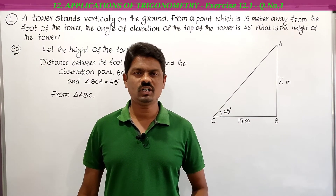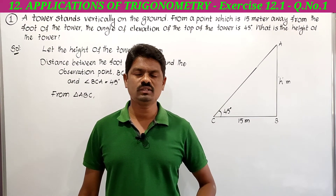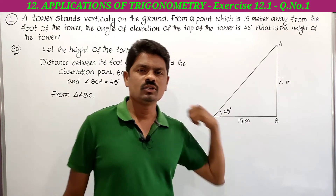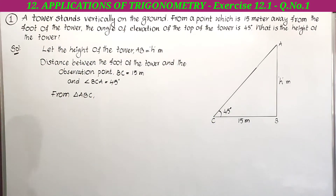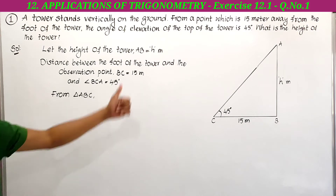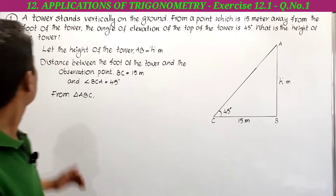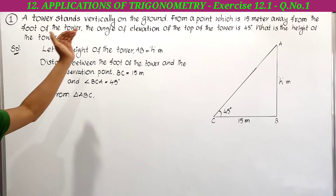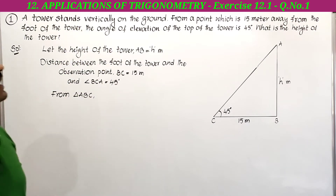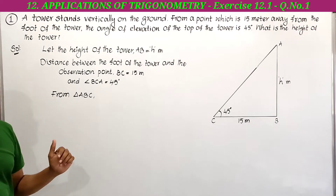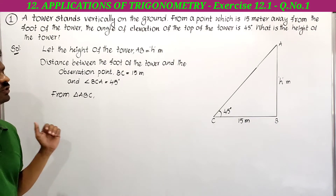Hi, hello, welcome to our channel Learn More Maths. Today we are going to solve problems from Exercise 12.1. The first problem: a tower stands vertically on the ground. From a point which is 15 meters away from the foot of the tower, the angle of elevation of the top of the tower is 45 degrees. What is the height of the tower?